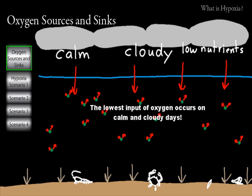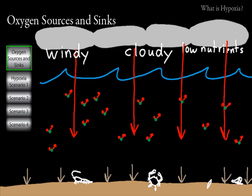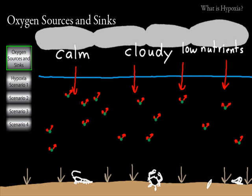Not much photosynthesis and not much atmospheric input of oxygen on a calm, cloudy day. The surface of the water is a barrier to oxygen getting in — a barrier between the atmosphere and the water. Maybe you've heard of surface tension on the surface of water. If you break that surface tension with waves, then oxygen is able to get into the water more easily. So a windy, cloudy day would be better for oxygen input than a calm, cloudy day.